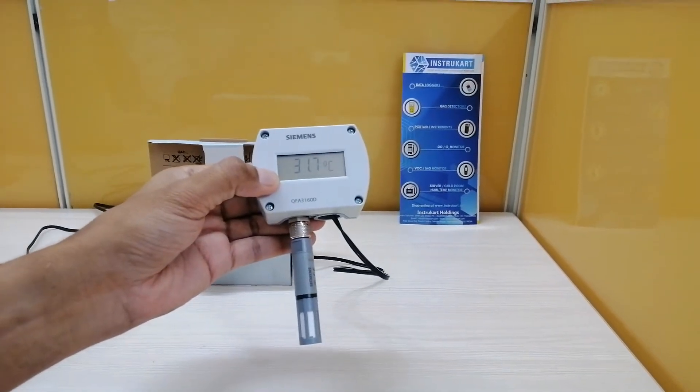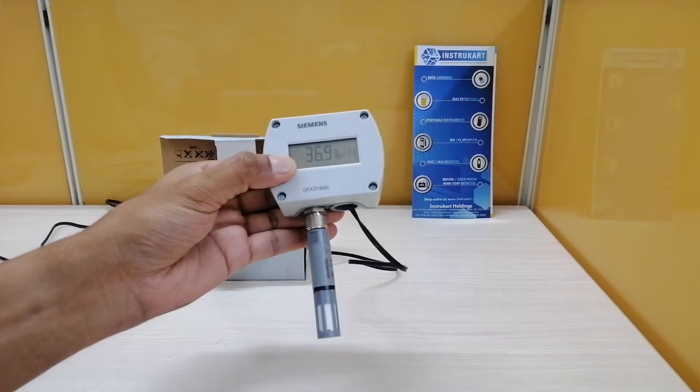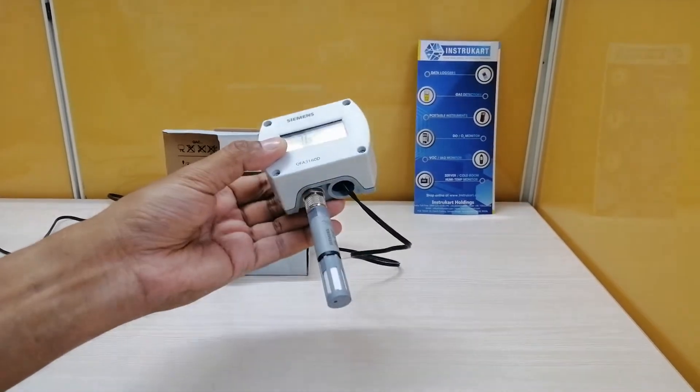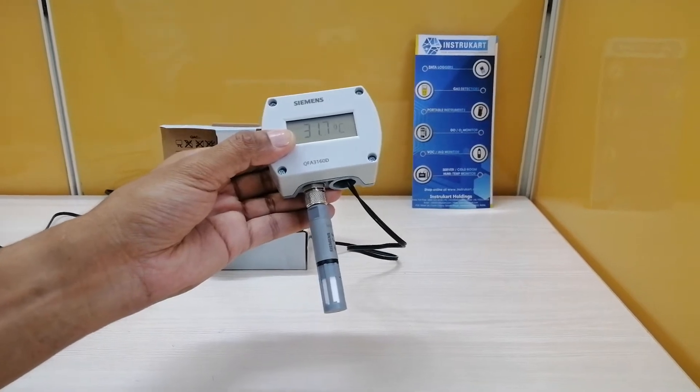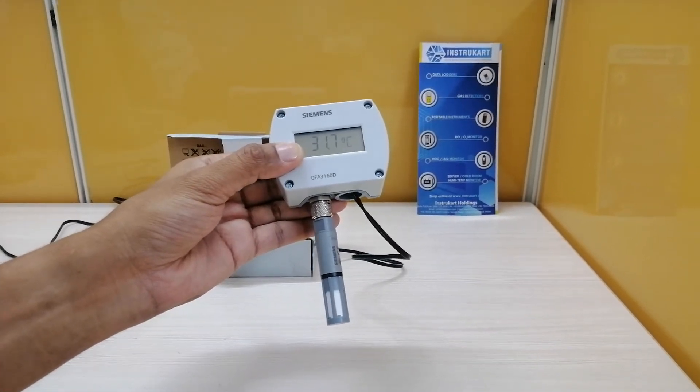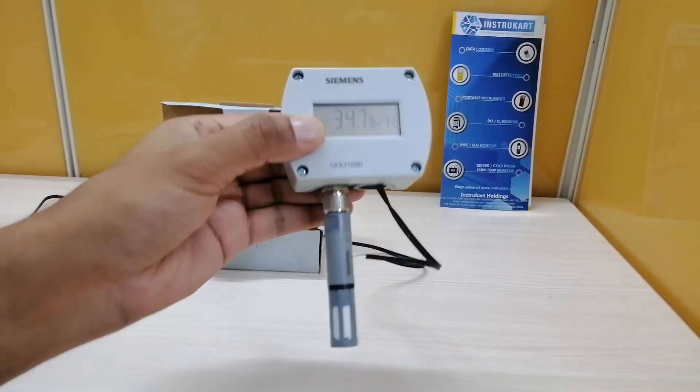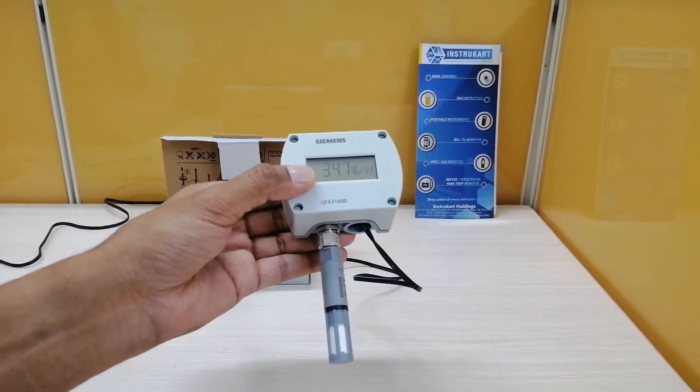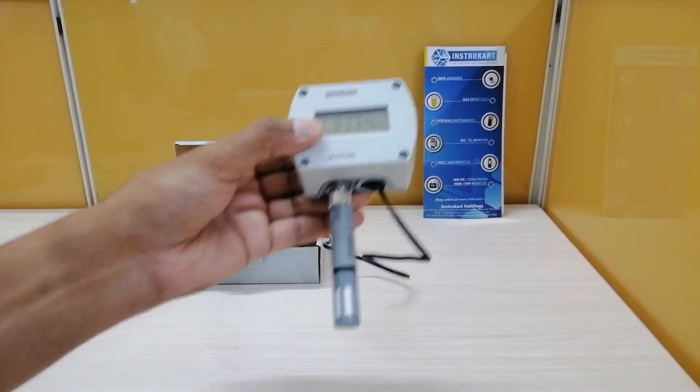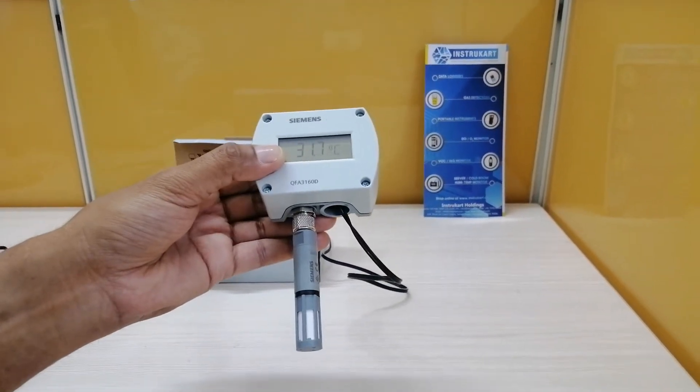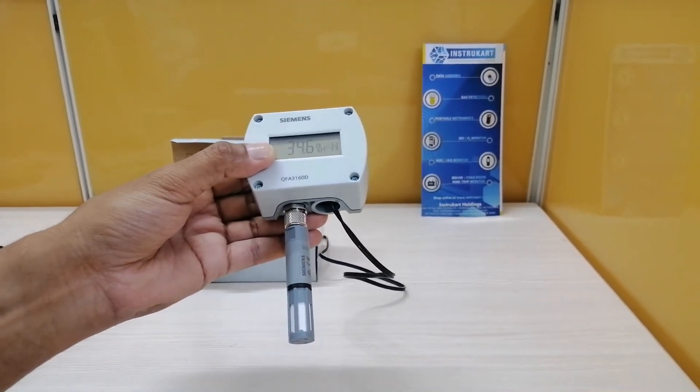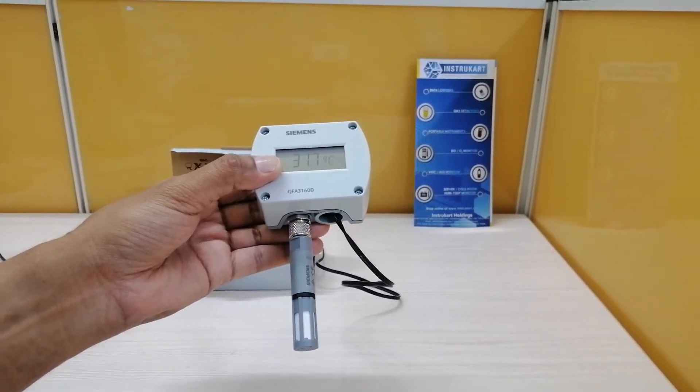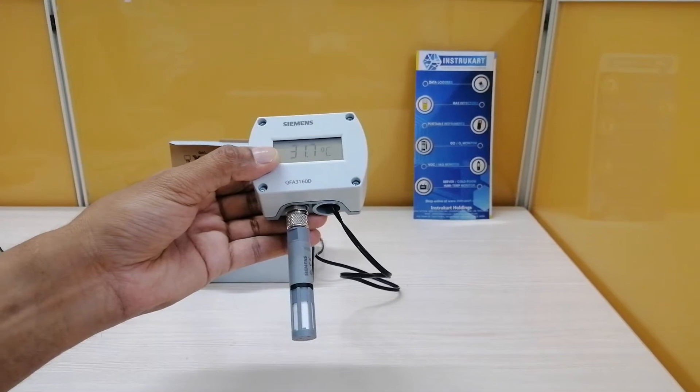Hello and welcome to Instacart Holdings, your worldwide instrument partner. We have a temperature and humidity monitoring device for room applications, the model QFA3160D from Siemens. It is mostly used in applications like storage and production facilities in the paper, textiles, pharmaceuticals, food, chemical and electronic industries, laboratories, hospitals, indoor swimming pools, any computer or EDP centers.